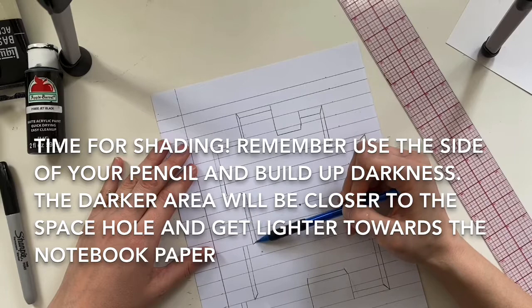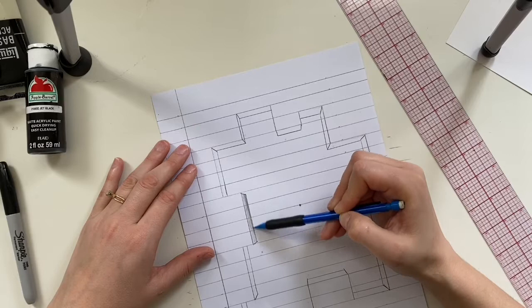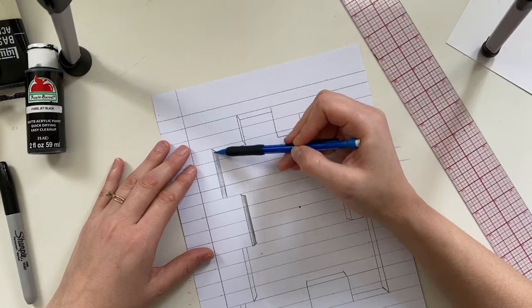All right. So now we need to get into some shading. Remember shading is best used if you're using the side of your pencil, not the tip of the lead. It's easier to build up. So draw lightly first and then you can build a darker layer.